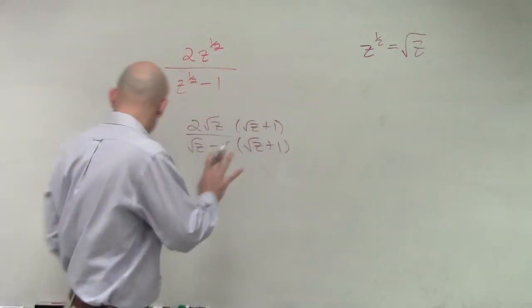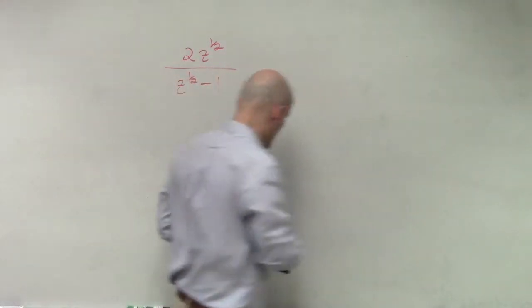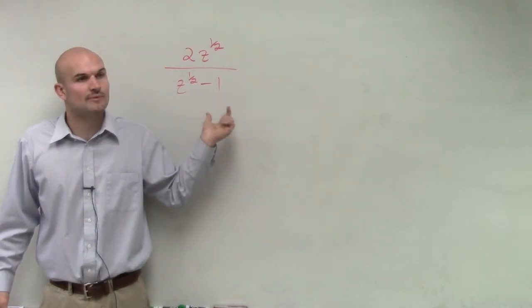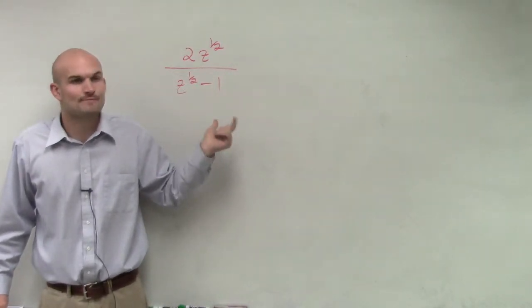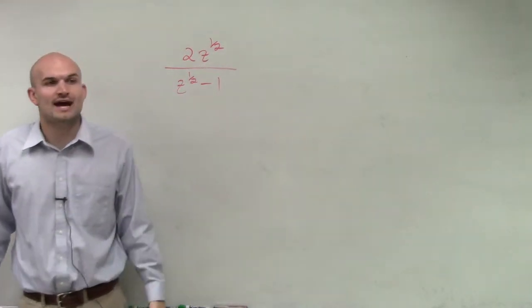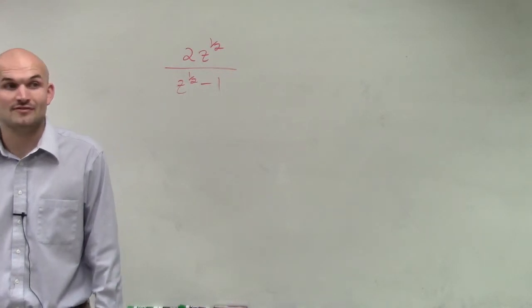So we're not dealing with radicals. But you guys should notice that just like we can't divide by a root on the bottom, we can't divide by a number with a rational exponent. So what do you think would be the conjugate of z to the 1 half minus 1? z to the 1 half plus 1.